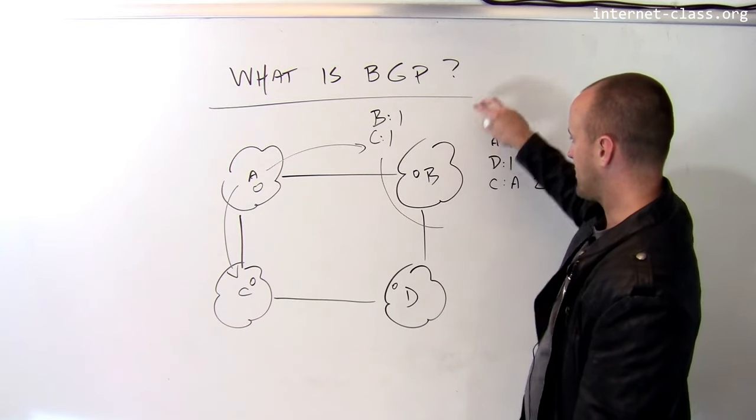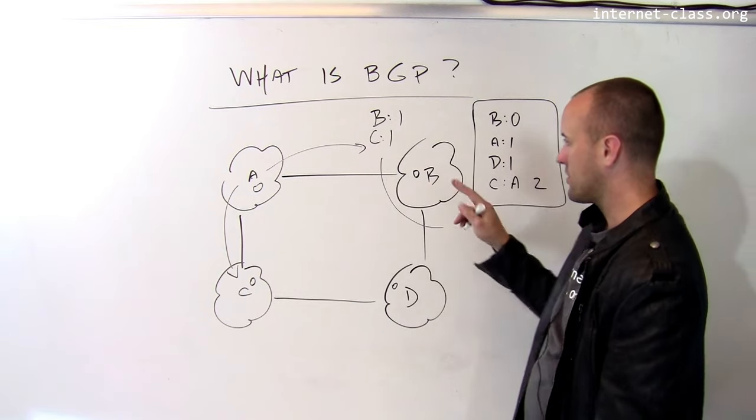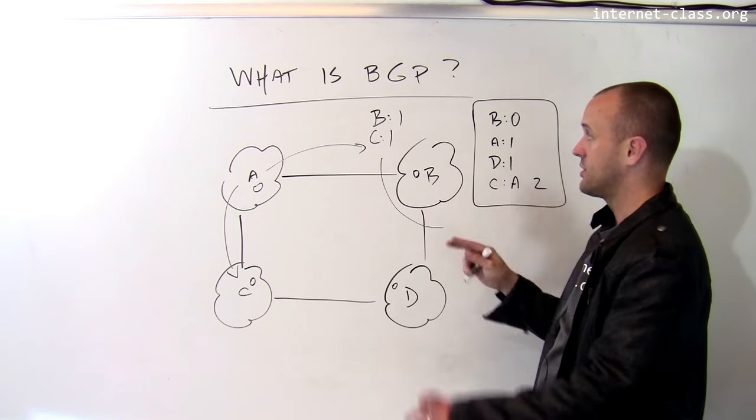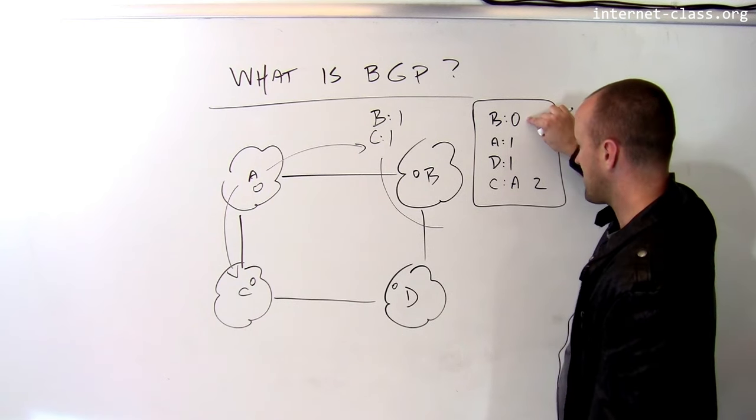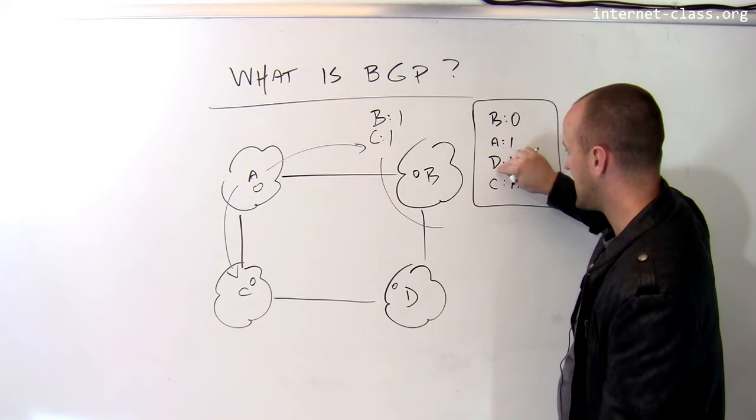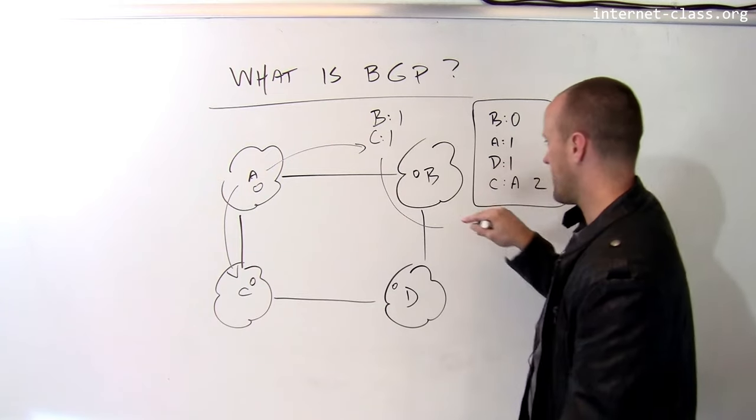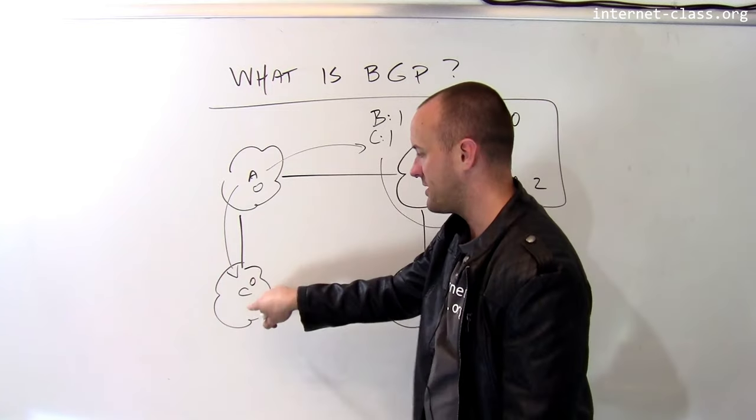So this is what the routing table that's used at B is going to look like after it receives this message using the border gateway protocol from A. So it knows anything destined for my own network I handle internally. Anything destined for networks A or D, I can send directly to those networks. And if I need to send something to network C, I can transmit it through network A.